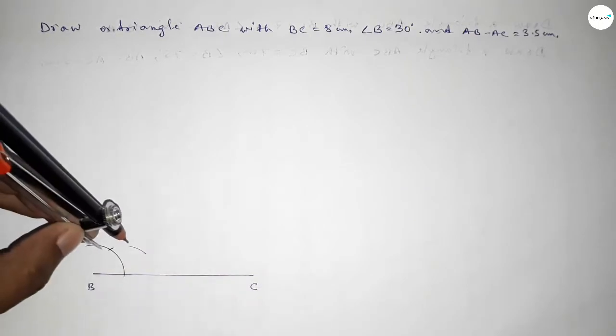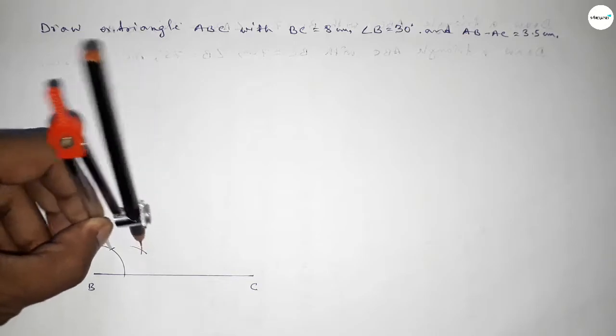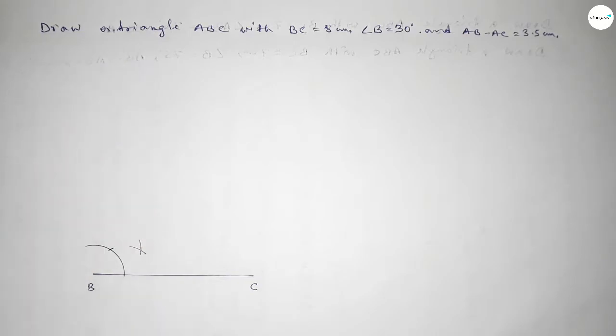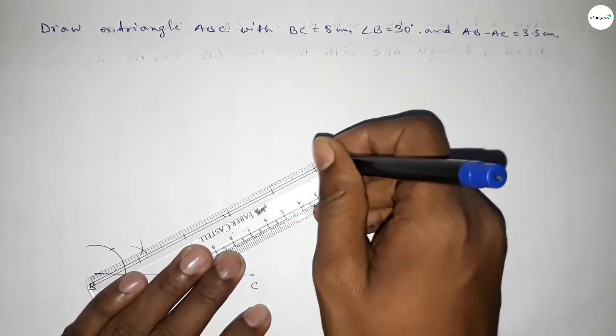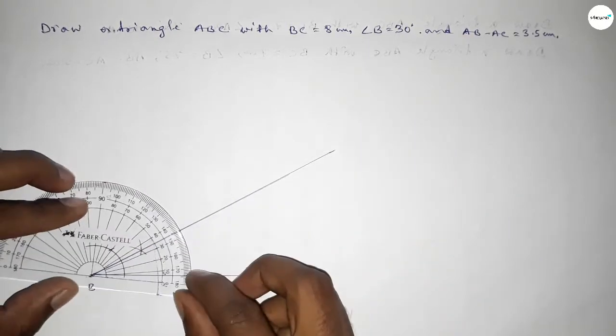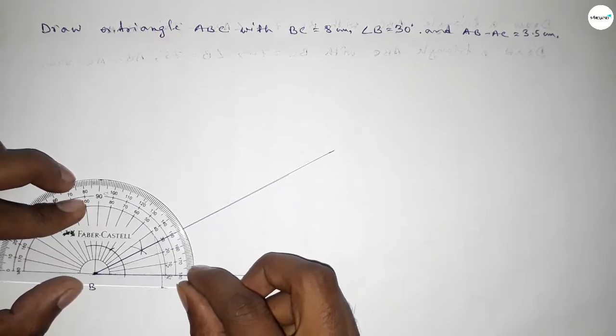With same length, putting the compass here and cut here, so both the curves intersect at a point. Now joining this side to get here 30 degree angle. Now checking whether it is 30 or not. So this is perfectly 30 degree.